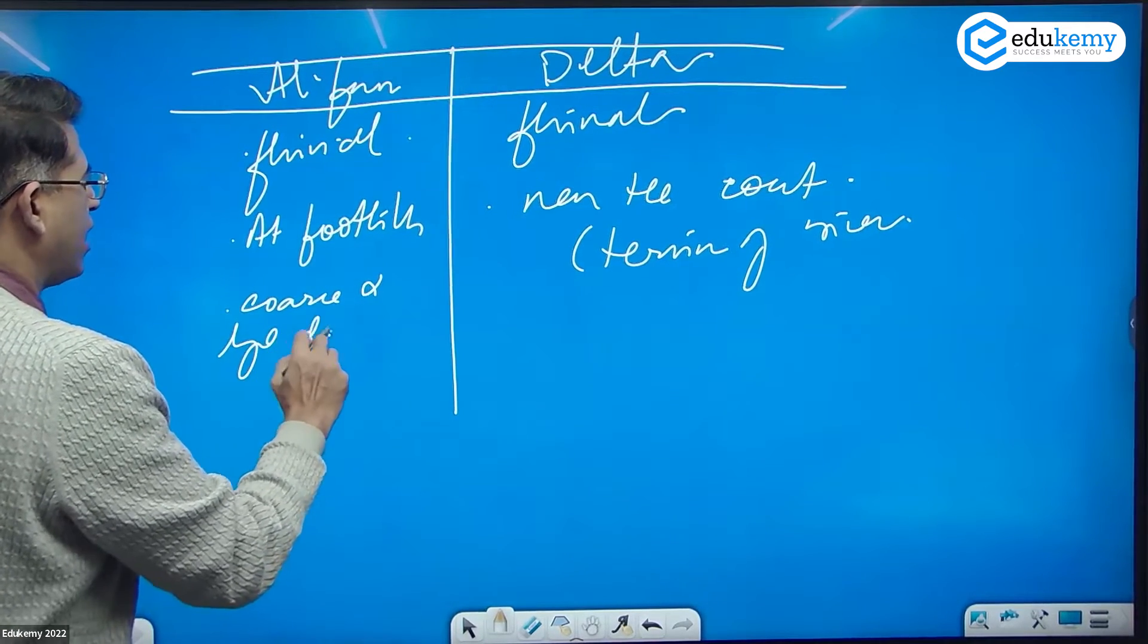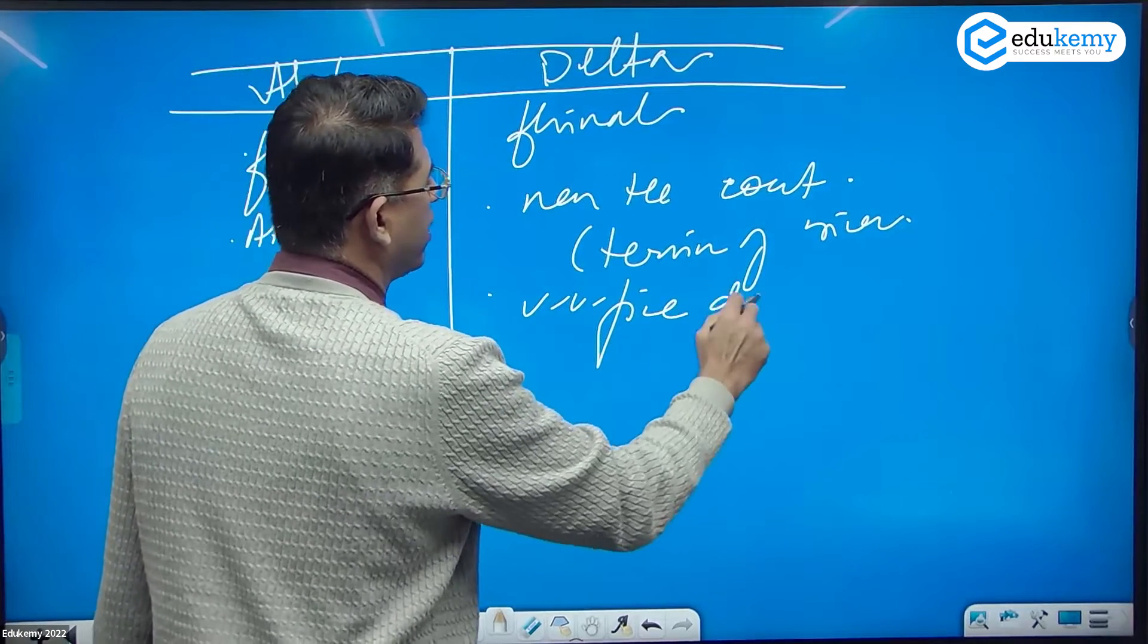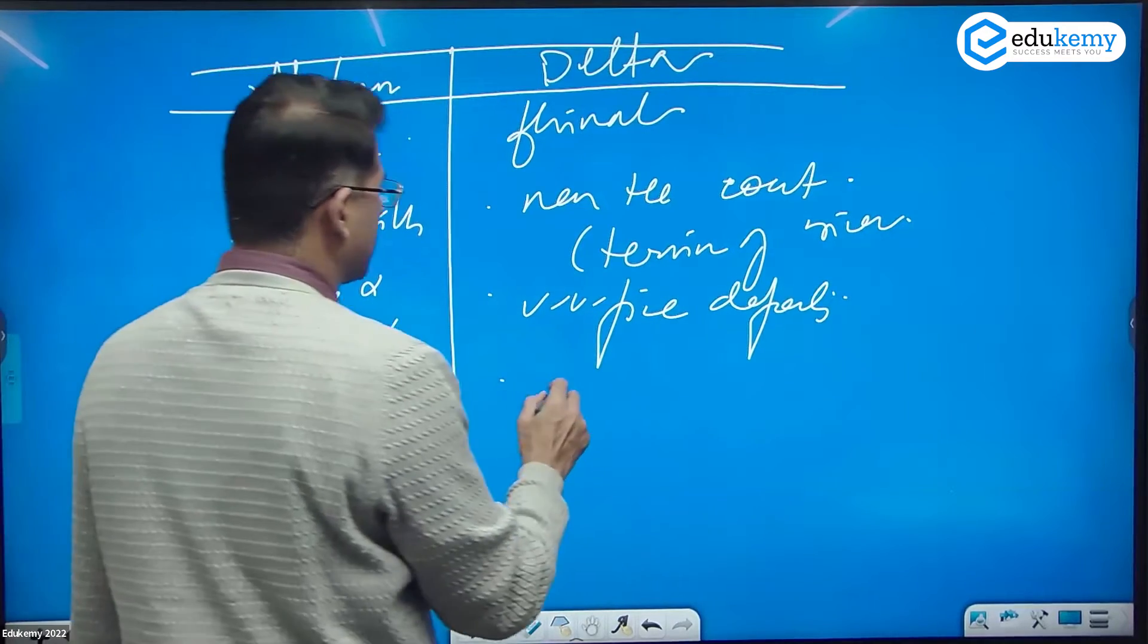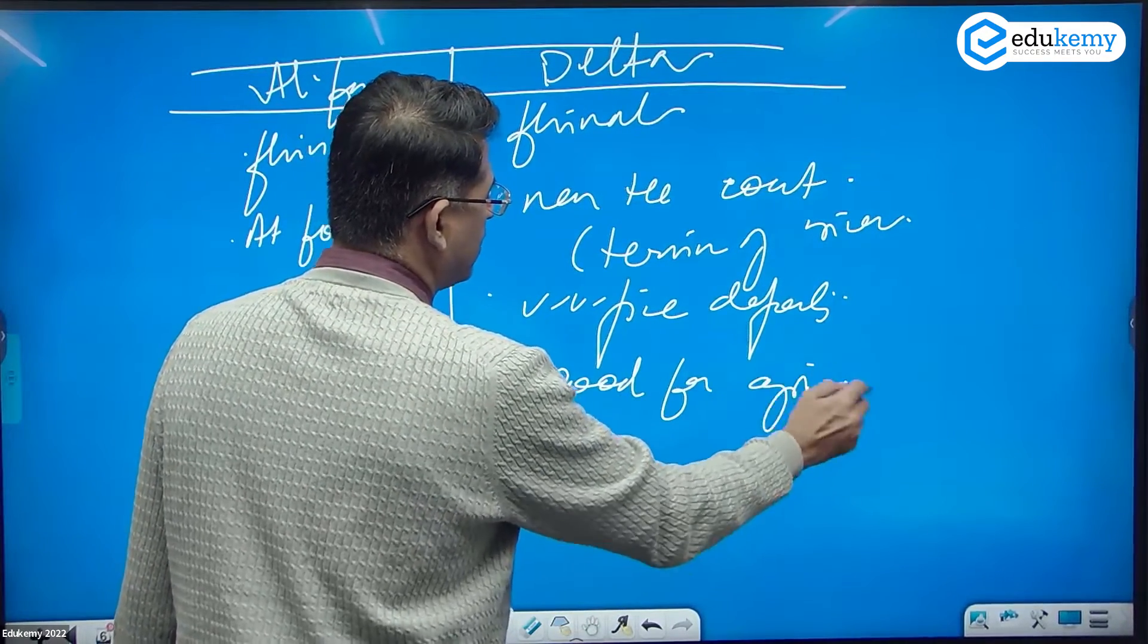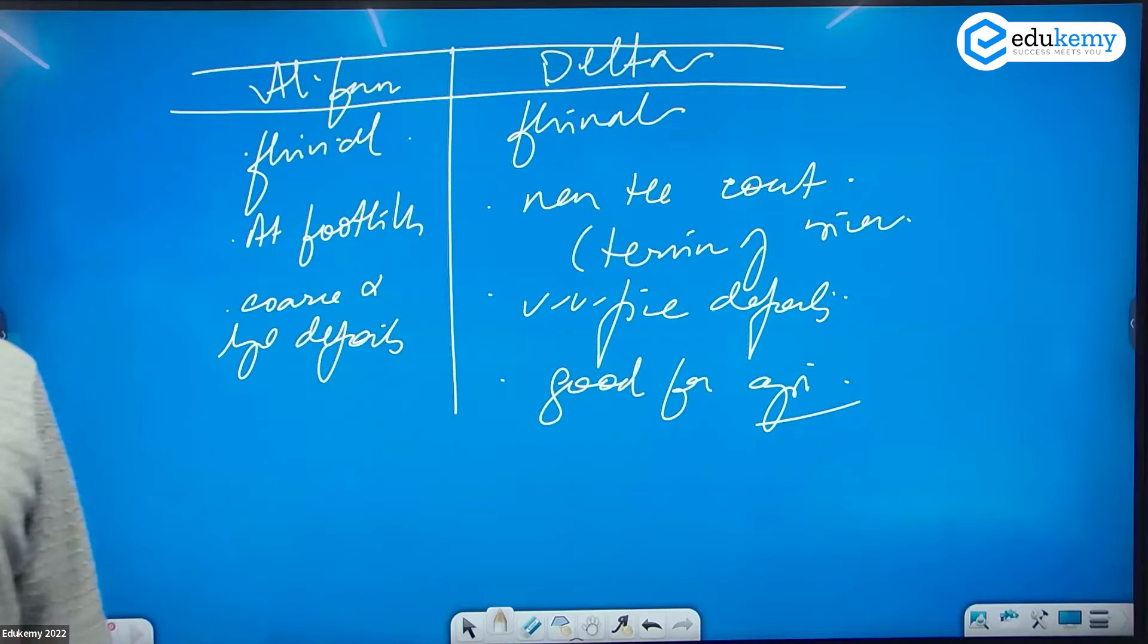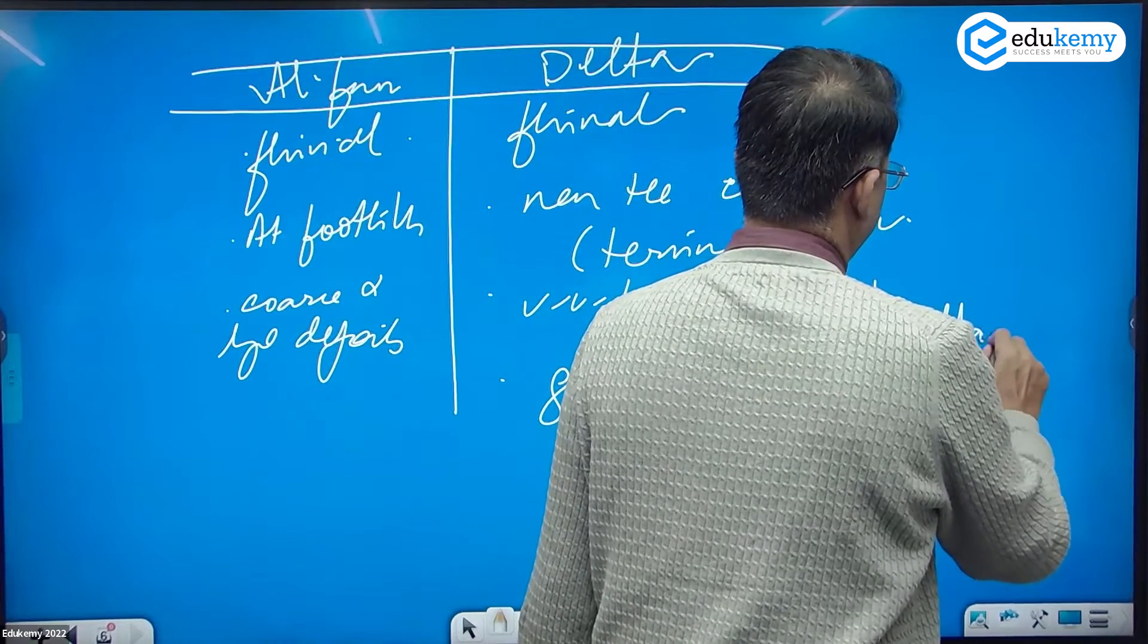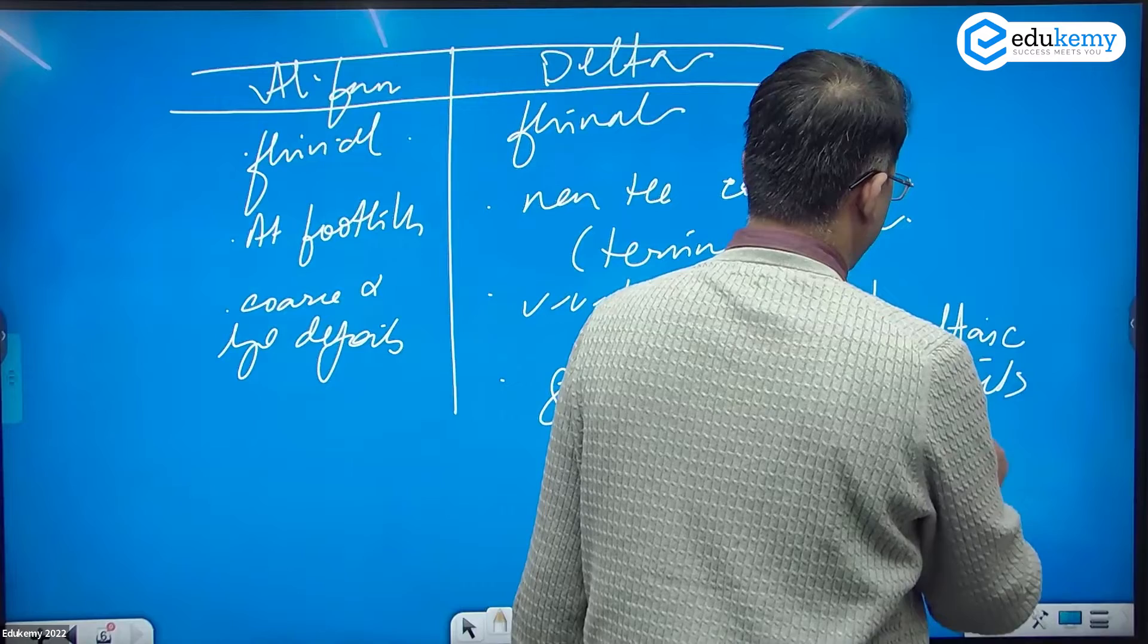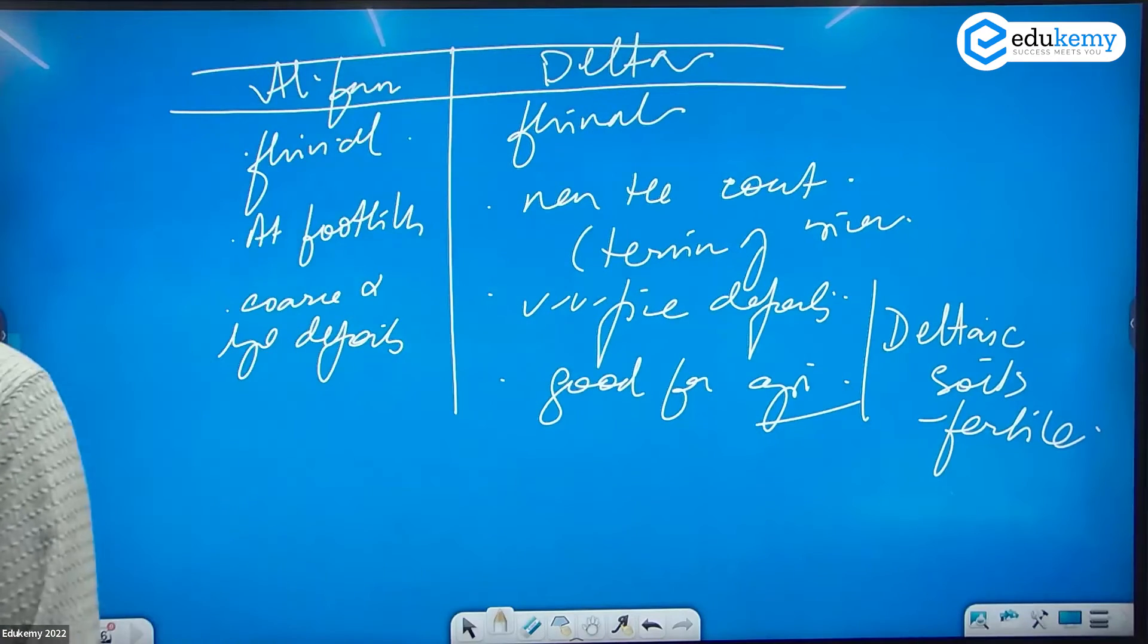These have very fine deposits. Because of fine deposits, they are good for agriculture cultivation. Deltaic soils are fertile soils.